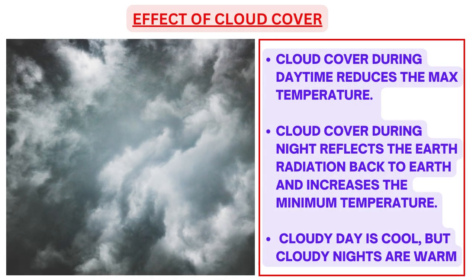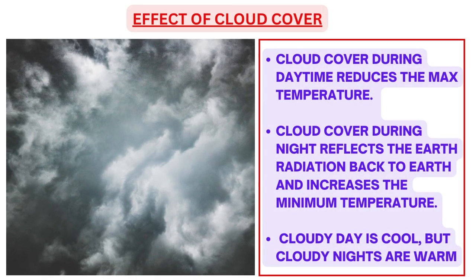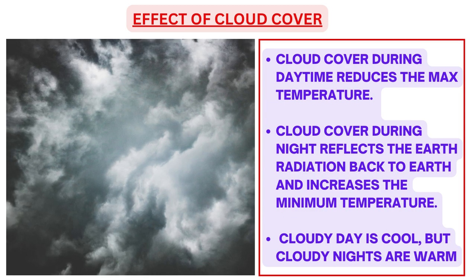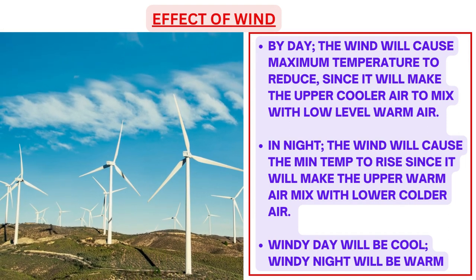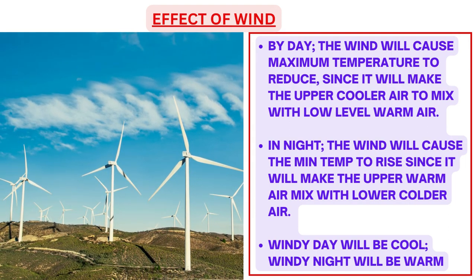Cloud cover during daytime reduces the maximum temperature. Cloud cover during night reflects earth radiation back to earth and increases the minimum temperature. So cloudy days are cool but cloudy nights are warm. Regarding the effect of wind: by day, wind causes the maximum temperature to reduce since it mixes the upper cooler air with low level warm air. At night, wind causes the minimum temperature to rise since it mixes the upper warm air with the lower colder air. To summarize, a windy day will be cool and a windy night will be warmer.